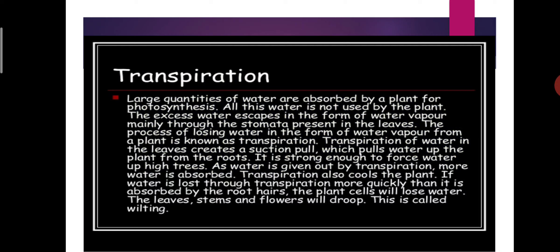The next topic is transpiration. Large quantities of water are absorbed by a plant for photosynthesis. However, all this water is not used by the plant. The excess water escapes in the form of water vapor, mainly through the stomata present in the leaves.